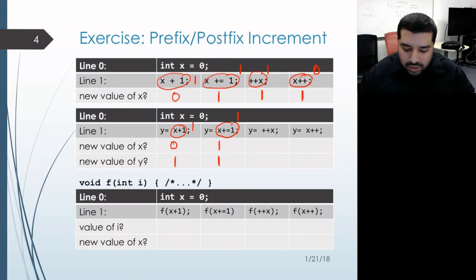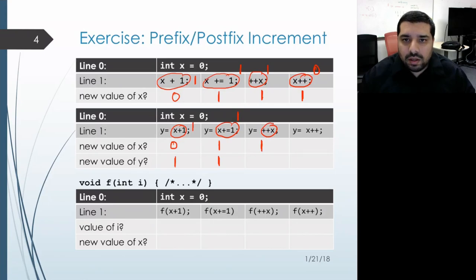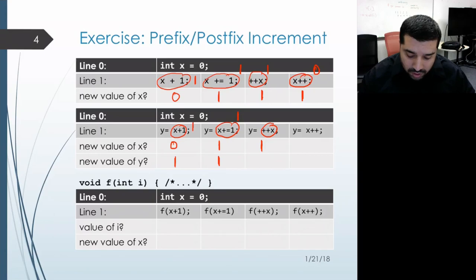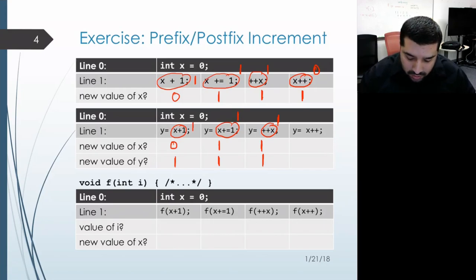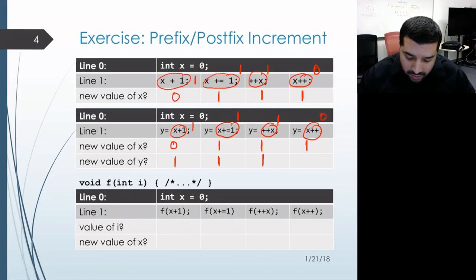Moving on to the third example, the same thing happens with plus plus x — it increments x to be 1, and what that gives us back as the result is the x object whose value is 1, so y gets value 1. Finally, y equals x plus plus: x plus plus increments x to have value 1, however it gives us back a temporary that contains the old value of x, which is 0, so y gets value 0.